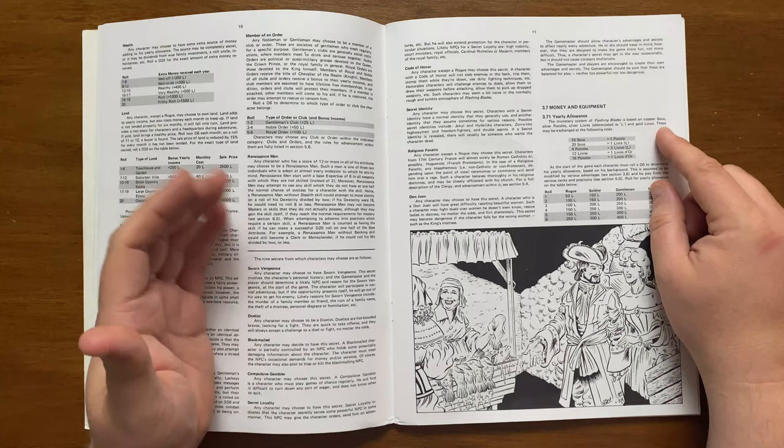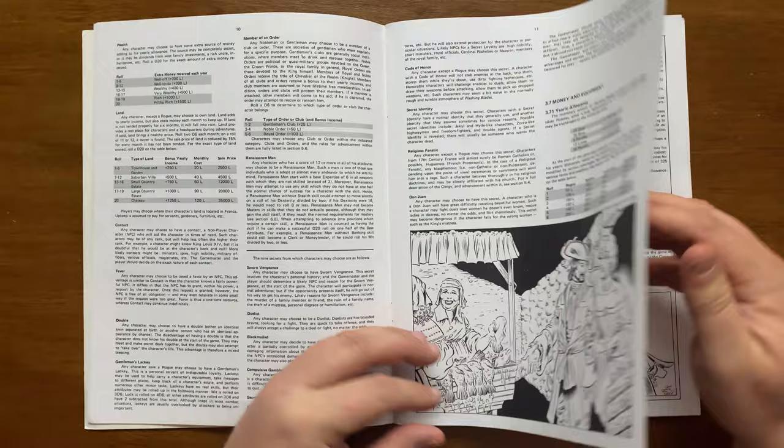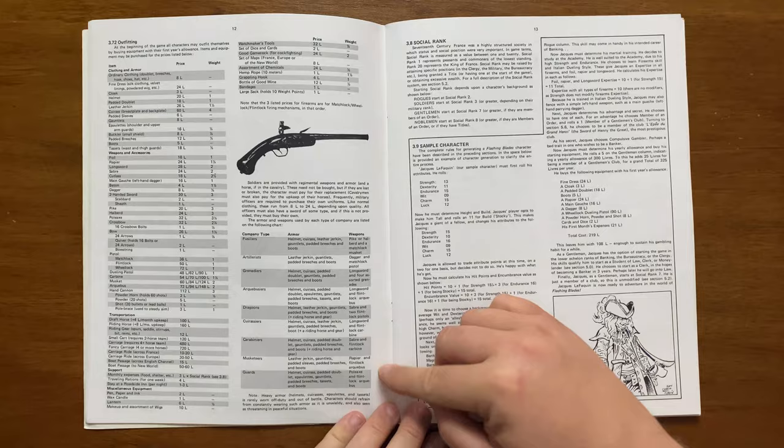After this we move on to money and equipment. The monetary system in France at the time was the Seuss, Pistot Livres and Louis d'Or. Characters determine their yearly allowance by rolling on this table here and comparing their class to the result. It gives a list of the usual equipment here, and details what soldiers of each rank would start play with.